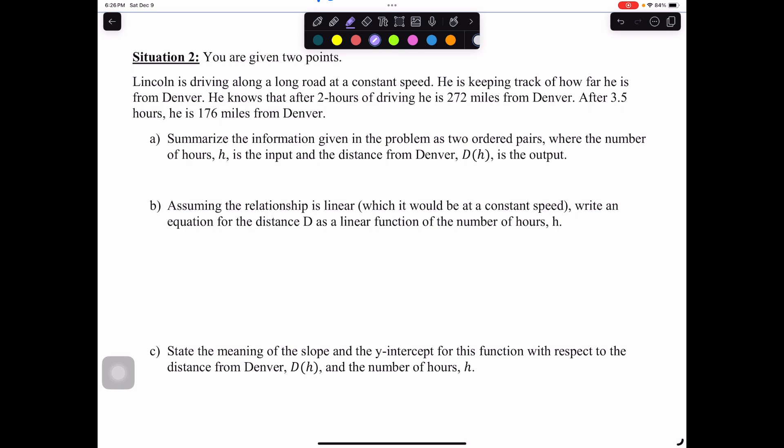Situation two, we're given two points. Lincoln is driving along a long road at a constant speed. Constant speed is implying a linear relationship. He is keeping track of how far he is from Denver. He knows that after two hours of driving, he is 272 miles from Denver. After three and a half hours, he is 176 miles from Denver. Part a says summarize the information given in the problem as two ordered pairs, where the number of hours h is the input and the distance from Denver D of h is the output.